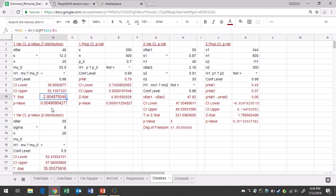And it looks like we have a test statistic of negative 2.80. That's rounded to two decimal places, and a p-value of 0.0049.